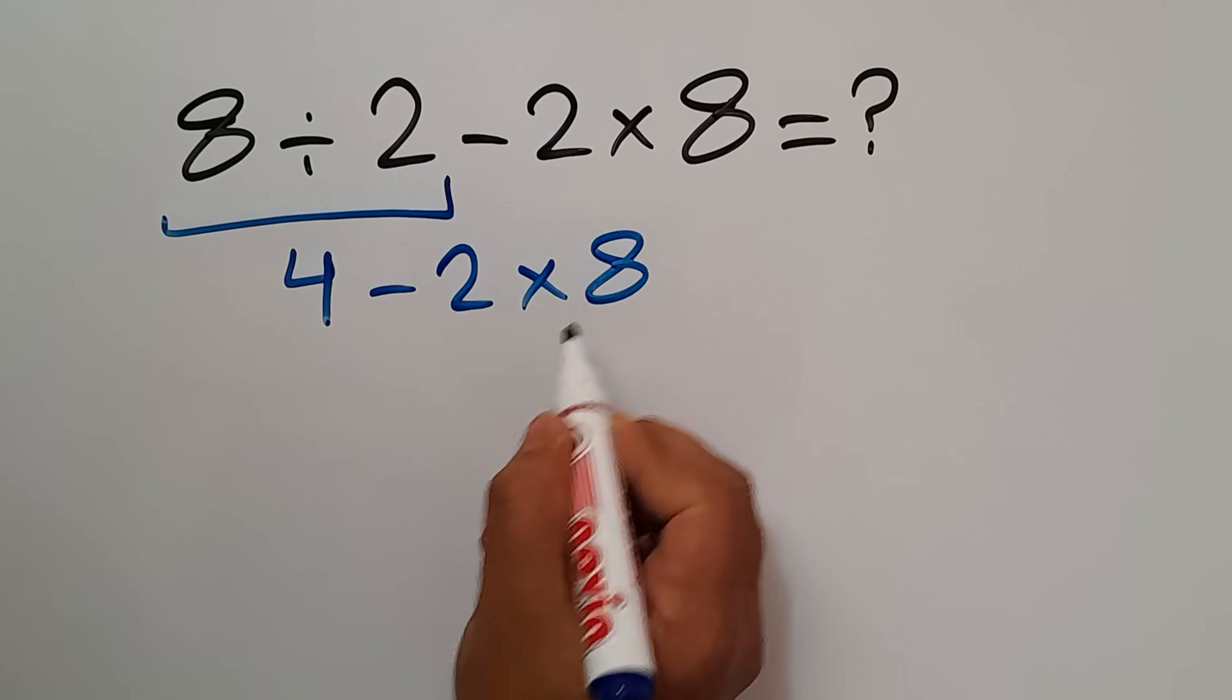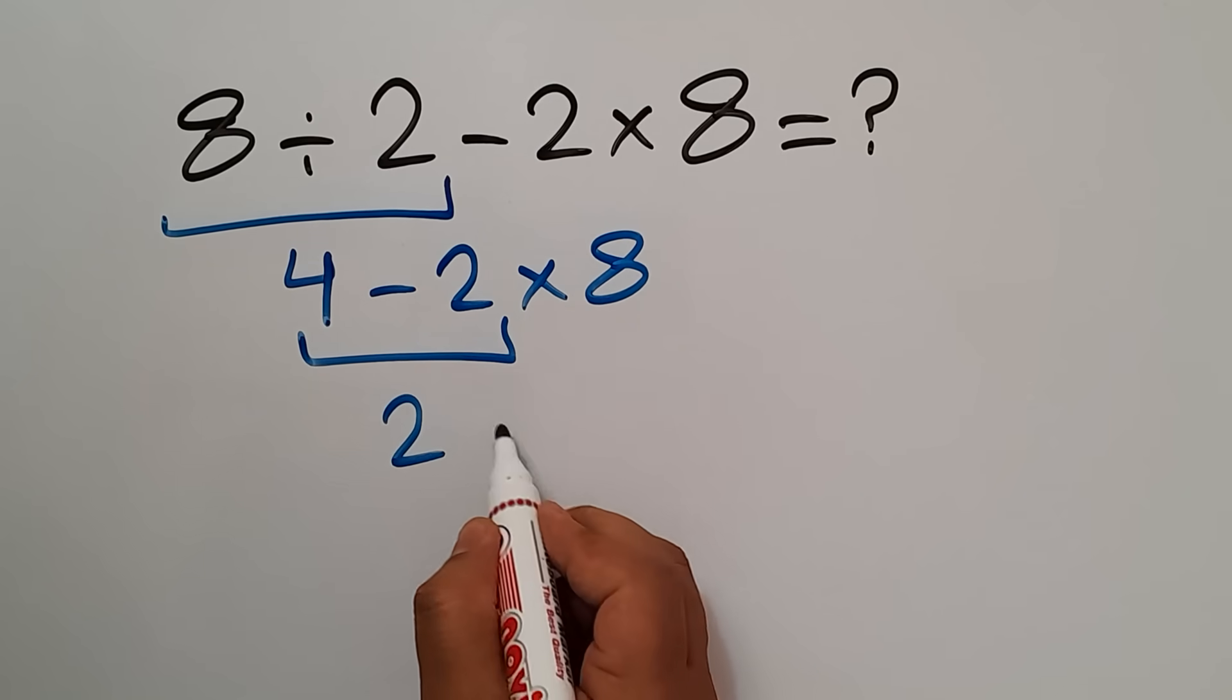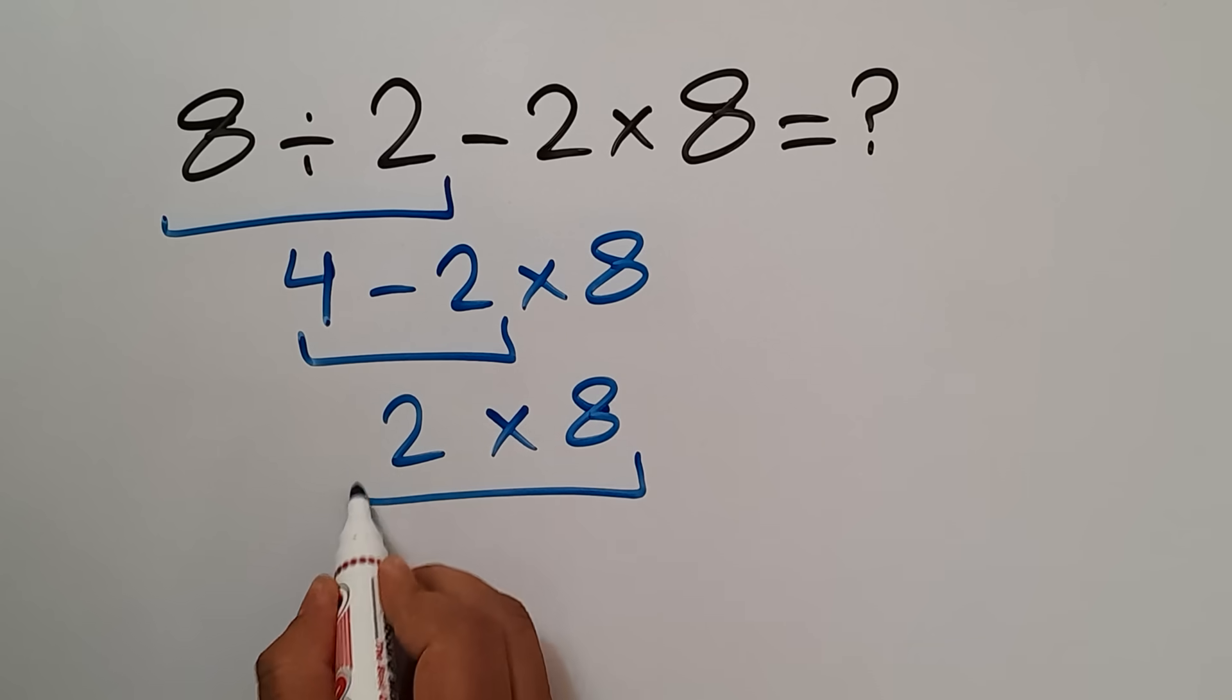Then times 8. 4 minus 2 equals 2, and 2 times 8 which equals 16. But this answer is not correct.